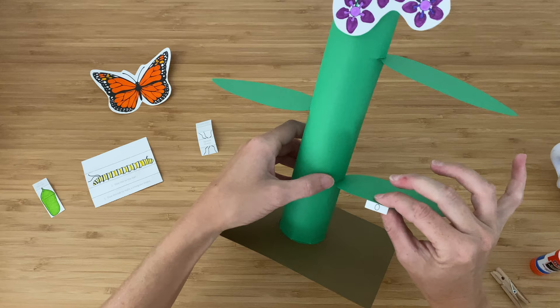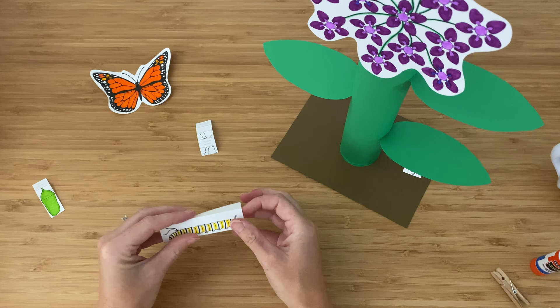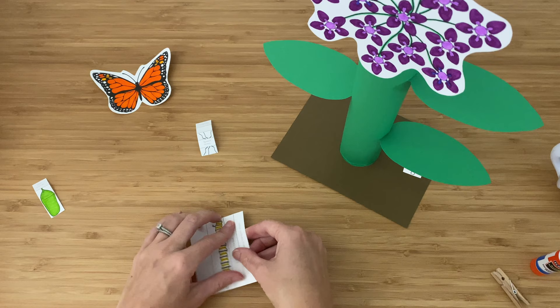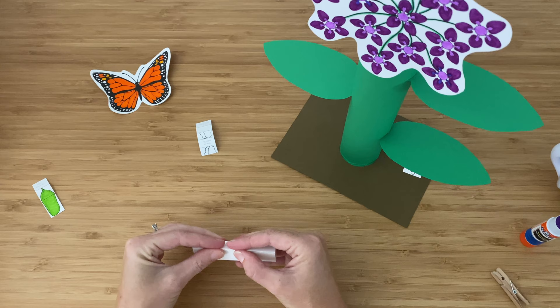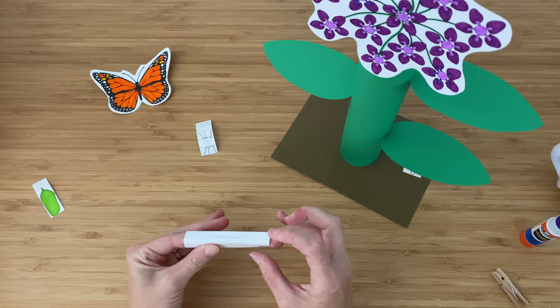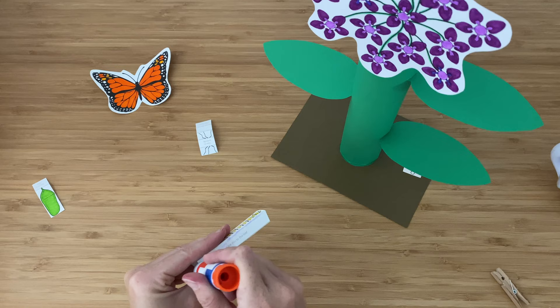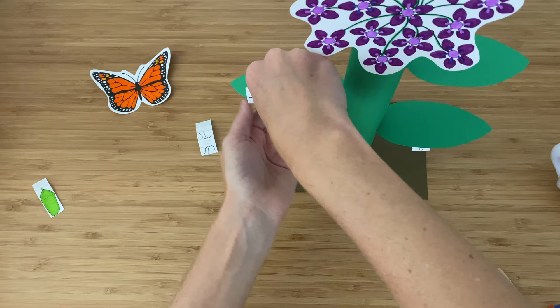Now for the caterpillar, we're folding backwards on all of the lines to make this triangular shape. And first I'm going to put glue right here and glue that triangular shape here. Then I'm going to put glue on the bottom of this and put the caterpillar on the middle leaf.